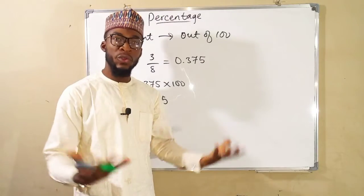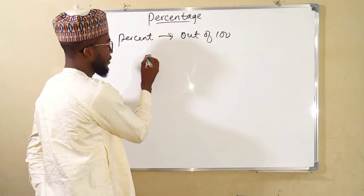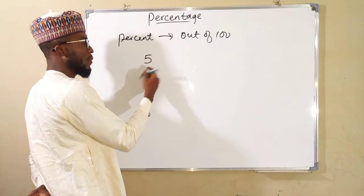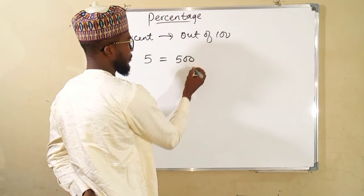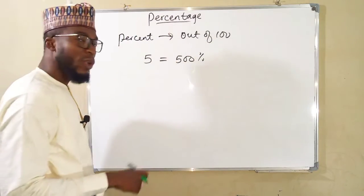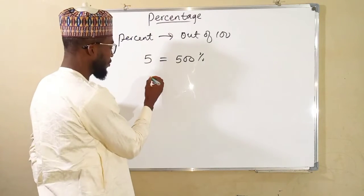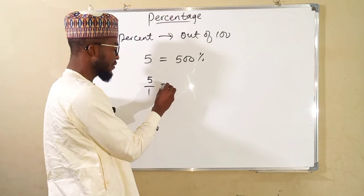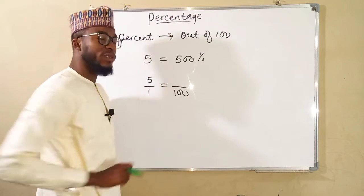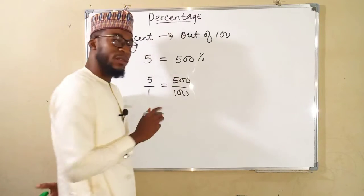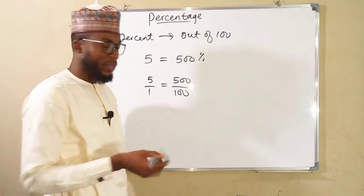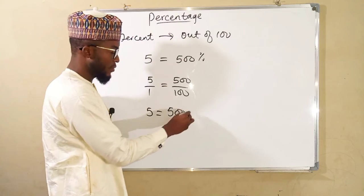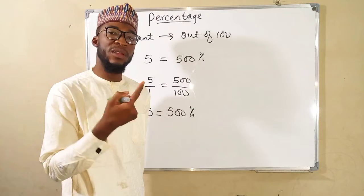What about whole numbers? To convert a whole number like 5 into percentage, it is as simple as multiplying the number by 100. So 5 times 100 gives us 500. You can also rationalize this whole number as 5 over 1. 5 over 1 is the same thing as 5, and equals 500 percent. Hence, 5 is the same thing as 500 percent.